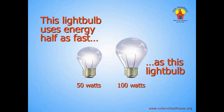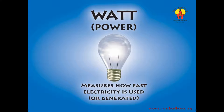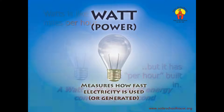What we're really talking about is how fast the light bulbs are converting electricity into light. We need a word that measures how fast they are doing this — that word is watt. The small light bulb uses electricity at a rate of 50 watts. The big light bulb uses electricity at a rate of 100 watts. Watts measure how fast electricity is used — how quickly we convert electricity into other forms of energy, like light or heat. Watts also measure how fast electricity is generated. Just like there can be a 50 watt light bulb, there can be a 50 watt solar panel. The 50 watt light bulb converts electricity into light at a speed of 50 watts. A 50 watt solar panel does just the opposite — it converts sunlight into electricity at a speed of 50 watts.